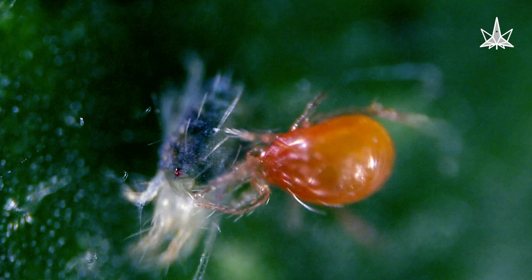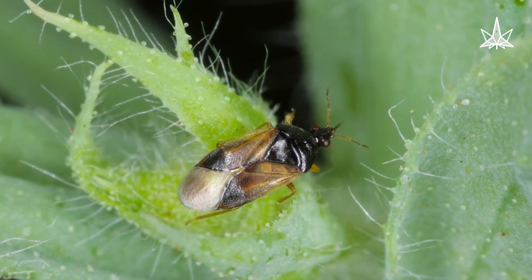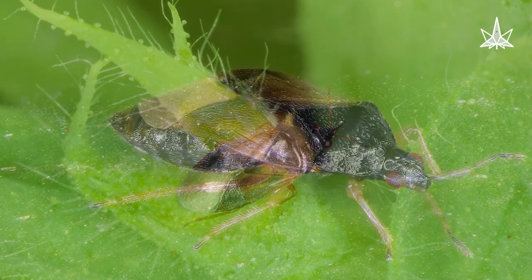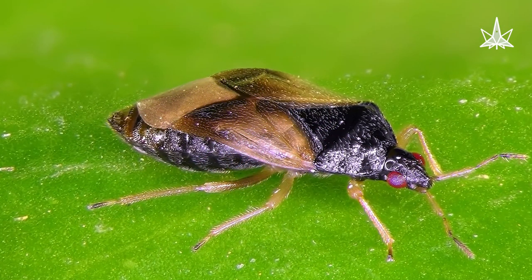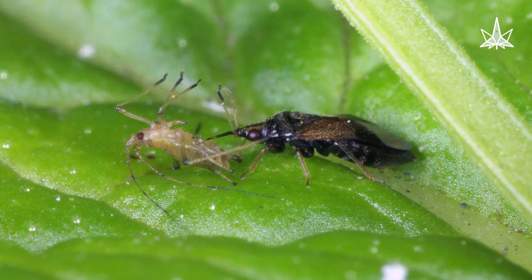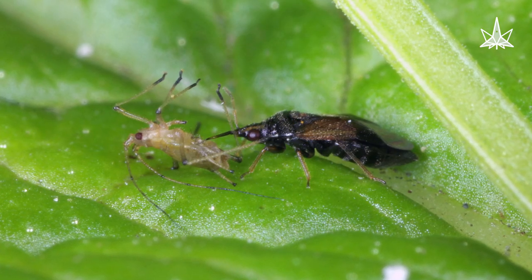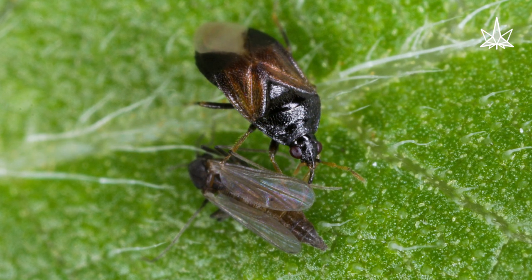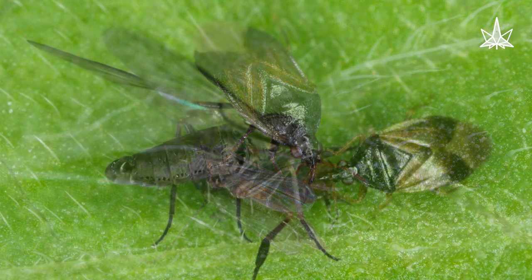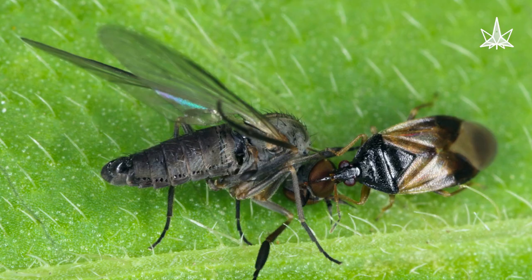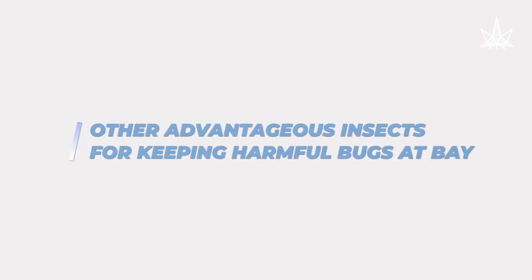Last but not least is the Anthocritae — this beneficial bug also feeds on spider mites, much like its Phytoseiulus persimilis cousin. Aside from eating spider mites, it also eats small caterpillars. The Anthocritae tackles its prey, and as the victim weakens, it pierces the food using its three-segmented beak, injecting digestive enzymes.